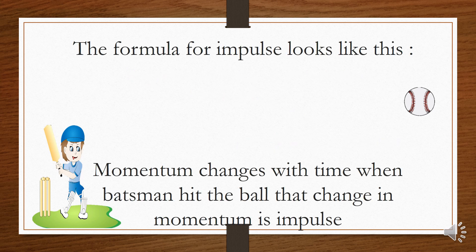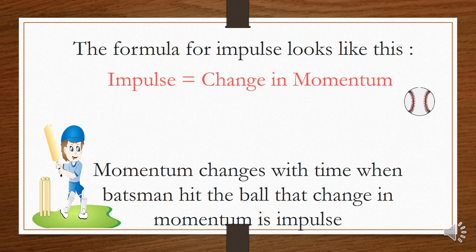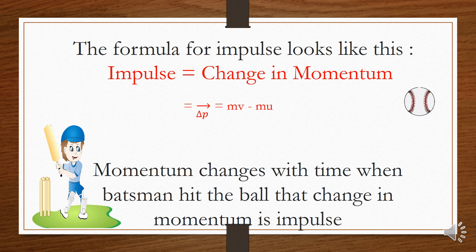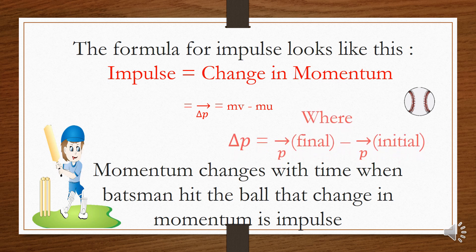An alternative formula for impulse looks like this: Impulse is equal to change in momentum, that's Δp vector. This formula relates impulse to the changes in the momentum of the object.